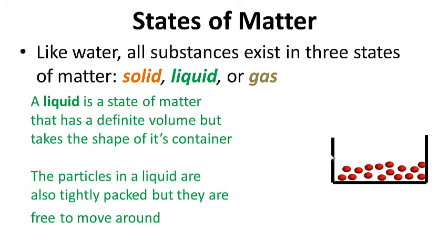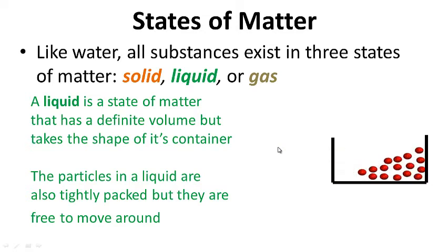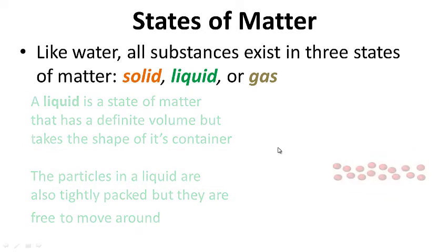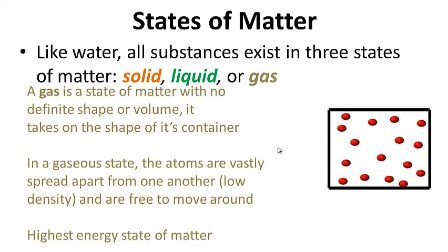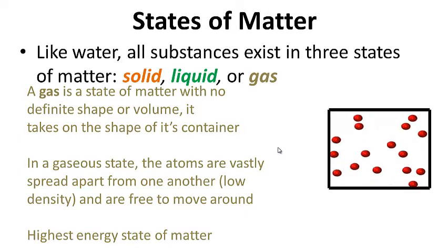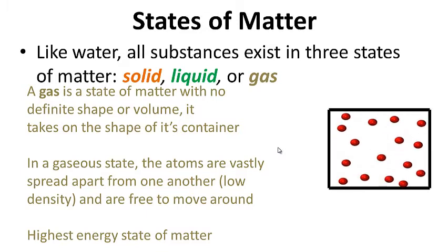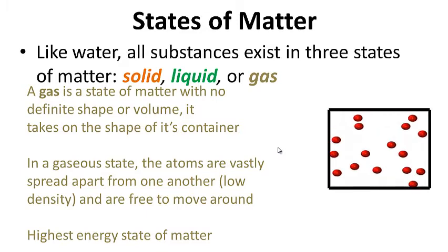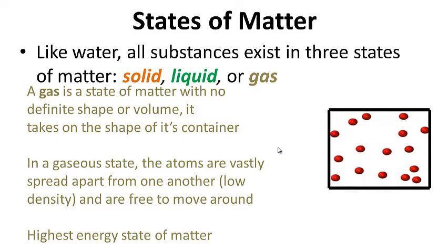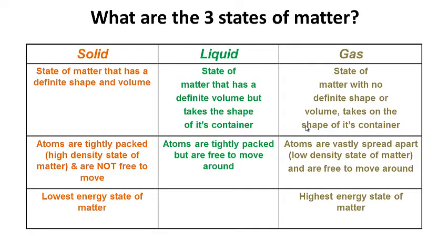The particles in a liquid are also tightly packed, but they are free to move around. A gas is a state of matter with no definite shape or volume — it takes on the shape of its container; think of a balloon. In a gaseous state, the atoms are vastly spread apart from one another, they have low density, and are also free to move around. Right now there are air molecules bouncing off you and the walls. It is the highest energy state of matter. Write down the table for what are the three states of matter on your answer side, then go ahead and pause.